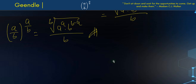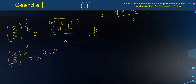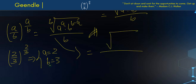Now let's take a viral problem that people are posting: 2 over 3 to the power of 2 over 3. In this case, comparing, we have a equals 2 and b equals 3. Let's replace these values in the formula we found. b is 3, so we're going to have the cubic root of a to the a — which is 2 squared — times b to the b minus a, which is 3 to the 3 minus 2.